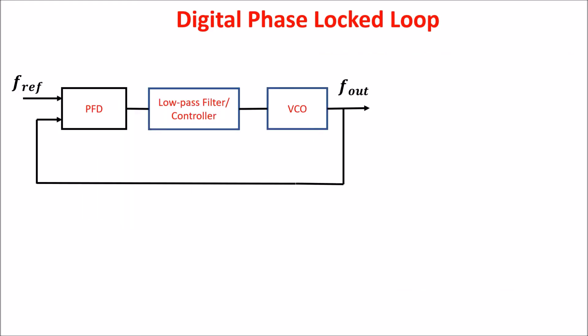Here are the basic blocks of a digital PLL. The first block is the phase and frequency detector, or PFD. It detects a difference in phase or frequency between the reference frequency and the output frequency fed back to the input, and gives an error signal as output. This error signal is proportional to the difference in phase or frequency. The second block is a charge pump circuit plus a low-pass filter, which transforms the input error signal into a delta voltage — an increase or decrease of the voltage input of the VCO.